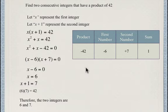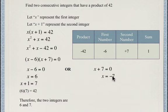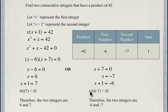There's also a second possibility. If x plus 7 equals 0, then x equals negative 7. The second integer is x plus 1, so negative 7 plus 1 equals negative 6. Our two integers are negative 7 and negative 6. Since negative 6 times negative 7 is positive 42, the two possible solutions are 6 and 7, or negative 6 and negative 7.